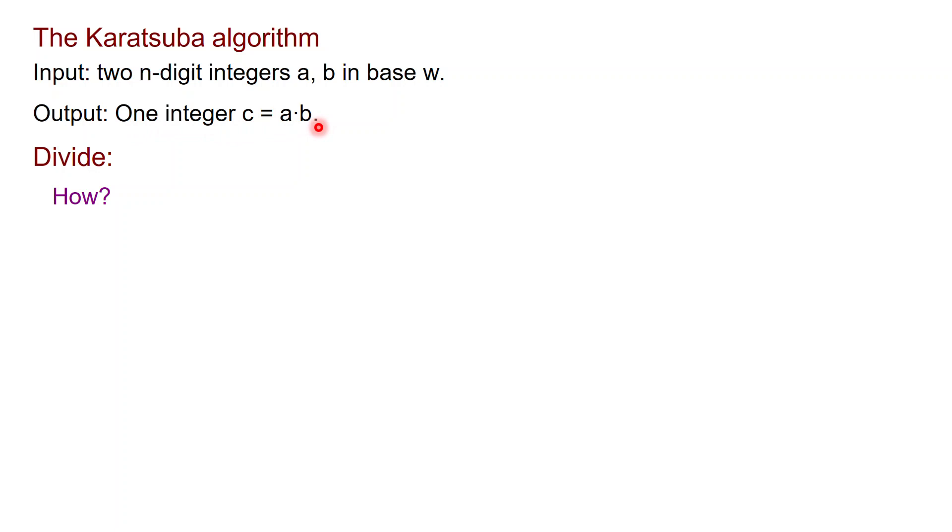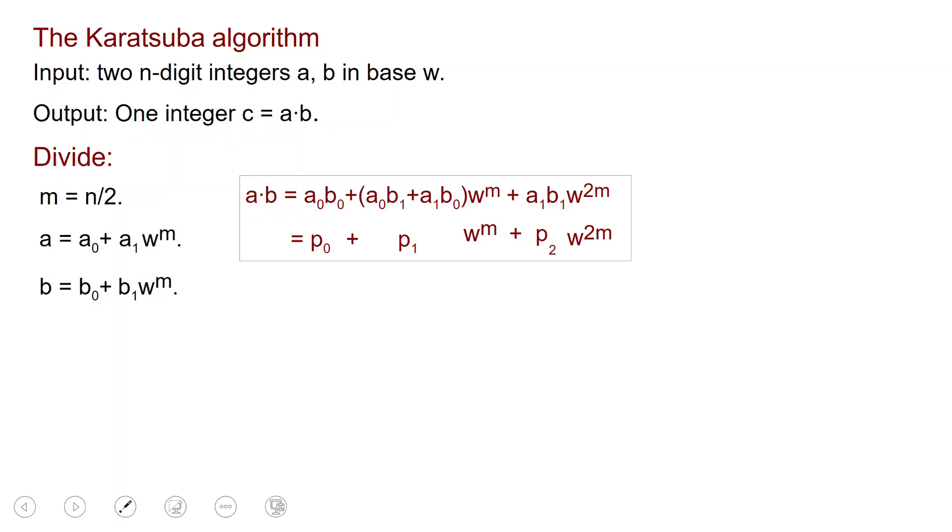So we are going to do divide and conquer. So first we are going to divide, and the way in which we divide is as follows. We are going to think of the numbers actually in a very large base and consisting of just two digits, A0 and A1. So we are going to pick N to be n over 2. And we are going to write A as A0 plus A1 W to the n over 2, and B as B0 plus B1 W to the n over 2.